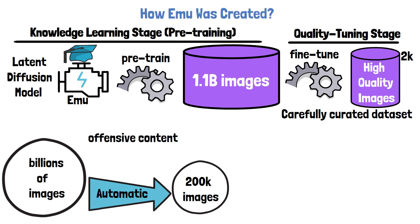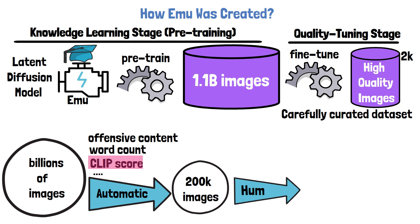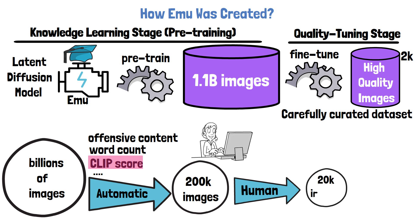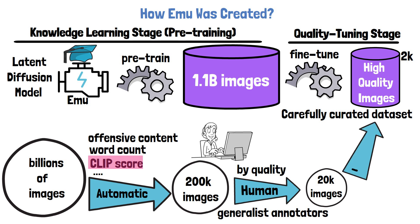The automatic filtering step includes various filtering rules, such as removing offensive content, removing images that have a lot of overlaying text, and removing images with a low CLIP score, among various others. CLIP is a model that connects text and images to the same embedding space. If we pass an image with its caption through CLIP, we want the embeddings for the image and the text to be similar — if they are not, the CLIP score is considered low. The next step in the pipeline is done by human generalist annotators, which reduces the set to 20k, filtering out images of low or medium quality that managed to pass the automatic filtering step.